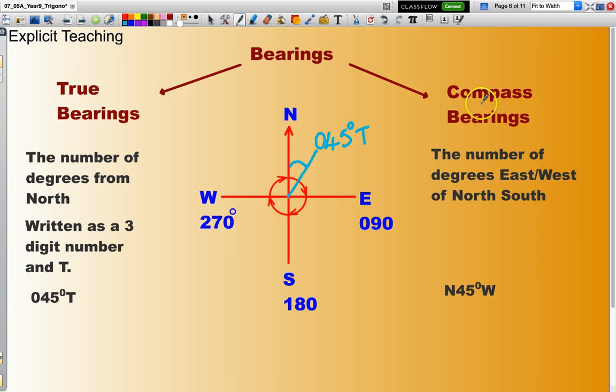And a compass bearing, some textbooks actually have compass bearings referenced as surveyor bearings. But basically, it's the number of degrees east or west of north or south. So, in other words, you're looking at this one here, north 45 degrees west. So, what this means is I start at north and I move around 45 degrees towards the west. I'm heading in this direction. And I will be going around 45 degrees. And that there is 45 degrees. See, I've started north. I'm heading around 45 degrees in a westerly direction. And that bearing would be north 45 degrees west.